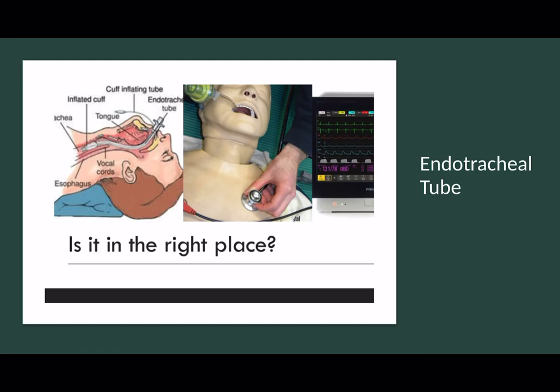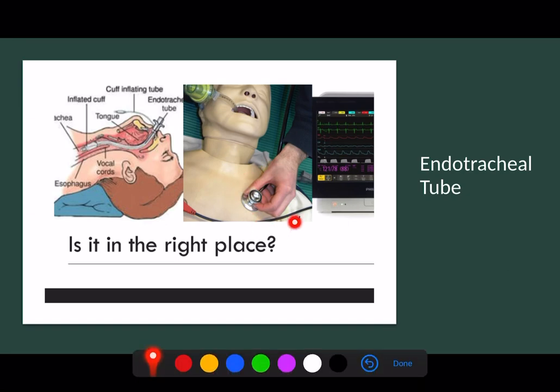The end-tidal trace tells you the tube is in the trachea, but you then need to confirm it's in the right place within the trachea. Examining the patient is really helpful here — you should listen to the patient's chest, both the left side and the right side. The risk is that the tube can go in too far and generally speaking it goes into the right main bronchus, giving you reduced air entry on the left side. If you ever hear that, you must always think: has the tube gone in too far?